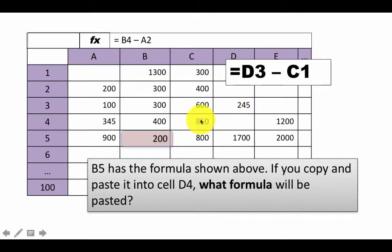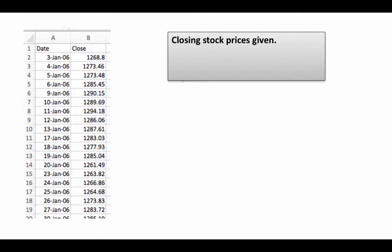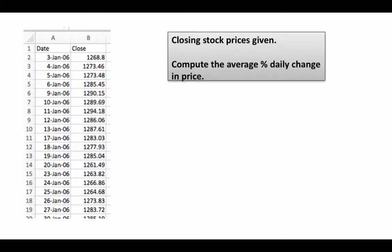Let's do one more example which is a little more realistic — it's got more data and is something you might actually do. So here we've got the closing stock prices of a particular stock. This is actually real data — closing stock prices starting from 3rd January 2006, for the entire year. The stock exchange is closed on weekends, so there are gaps. We've got closing stock prices for all the trading days of 2006. What we want to do is compute the average percent daily change in price.